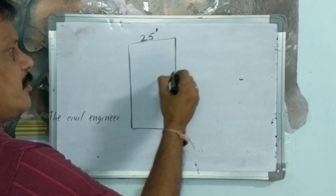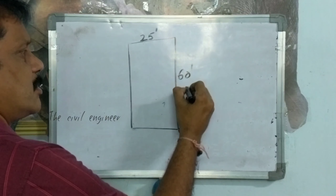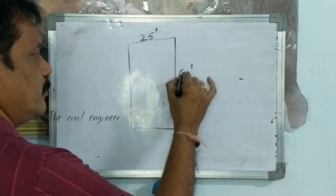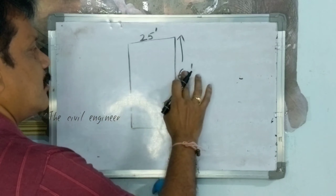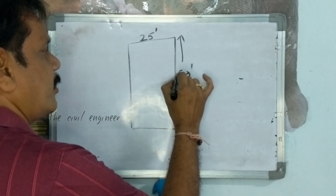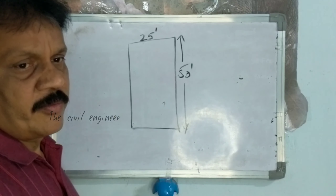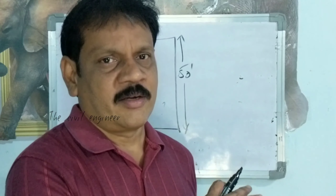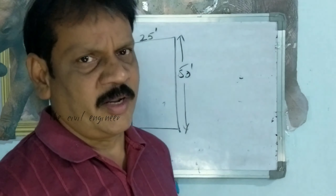Let us take a building site of 25 feet by 60 feet — or 25 feet by 50 feet. This is the site in which we have to draw the building plan.